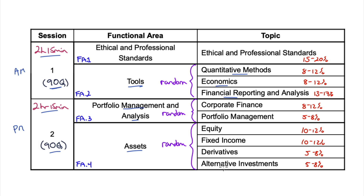Here is how it's going to work. Questions within a functional unit are randomized. So in functional unit one, ethics and professional standards, questions will be randomized — which means there'll be nothing but ethics questions. When you first start the exam, the first group of questions you get will all be ethics questions, grouped together.